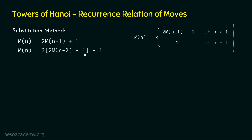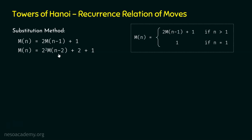This is what we get after the replacement: m(n) = 2·[2·m(n−2) + 1] + 1. We multiply 2 by the terms of this expression: 2 squared times m(n−2) plus 2 plus 1. So we get 2² · m(n−2) + 2 + 1. Similarly, we can substitute m(n−2) by 2·m(n−3) + 1, replacing n by n−2.